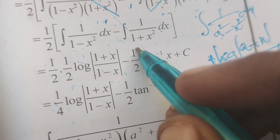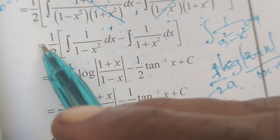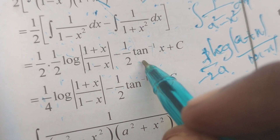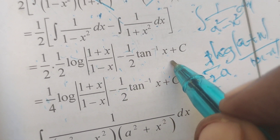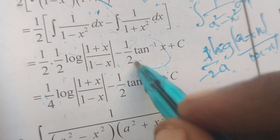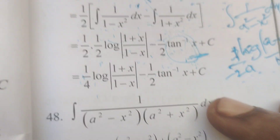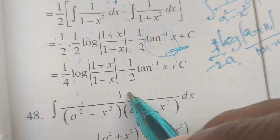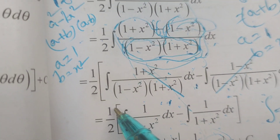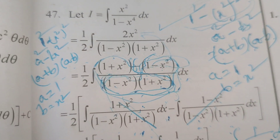Then applying the formula for 1 by x squared plus a squared, which is 1 by a times tan inverse of x by a. Here a equals 1, so we get tan inverse x. Therefore, after integrating and adding the constant, the final answer is: 1 by 4 log of 1 plus x by 1 minus x minus 1 by 2 tan inverse x plus C. This is the solution to the evaluated integral of x squared by 1 minus x power 4 dx.